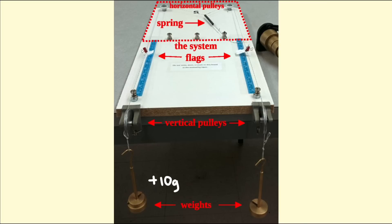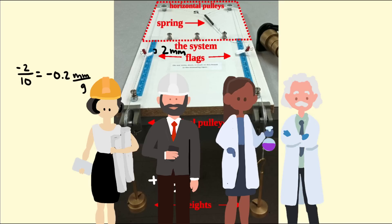For example, if adding 10 grams of weight moved the x marker down by 2 millimeters, then they would estimate the derivative as a negative 2 divided by 10, which is a negative 0.2 millimeters per gram. Both of those groups were able to write down an estimate.